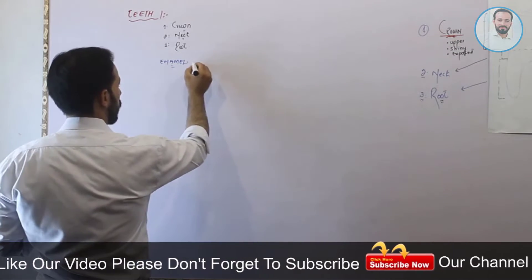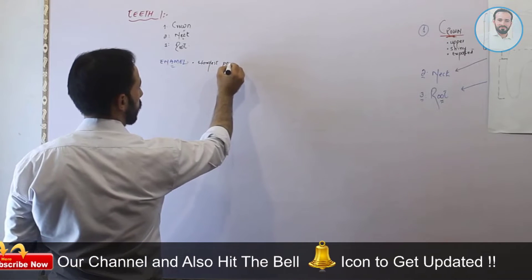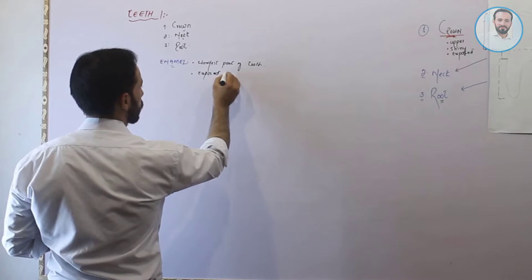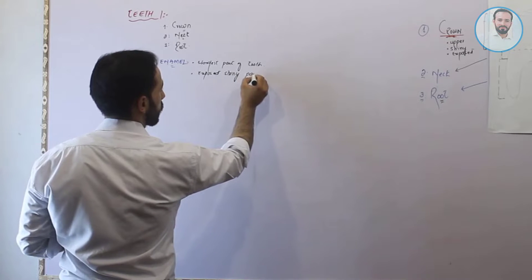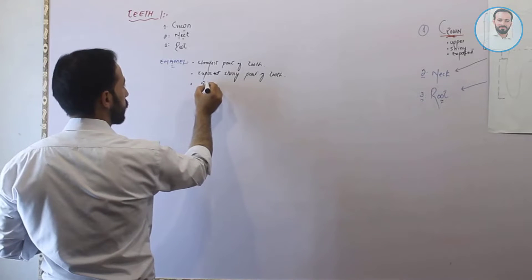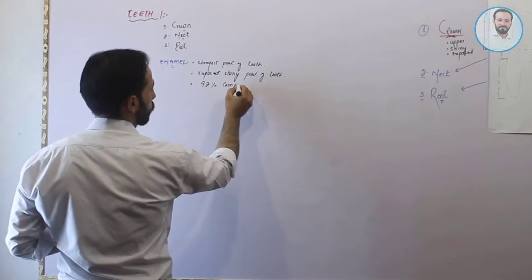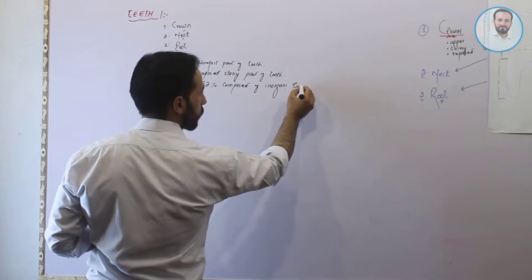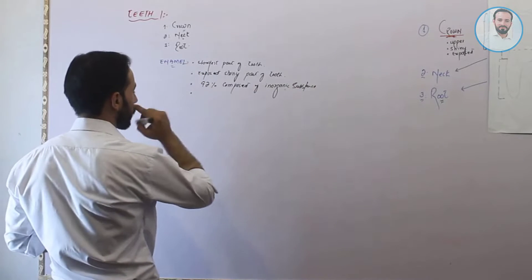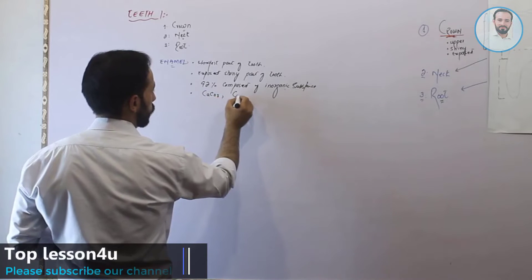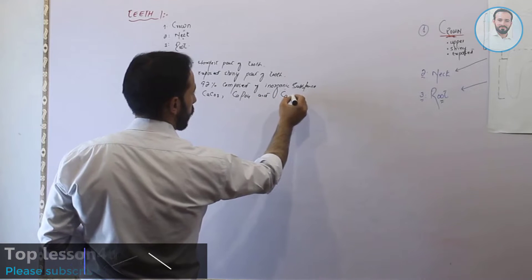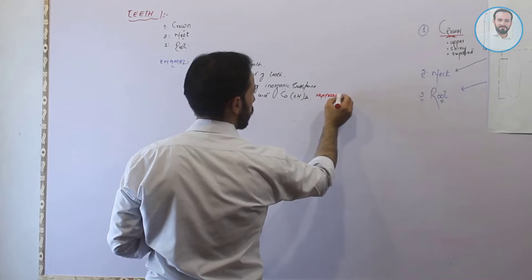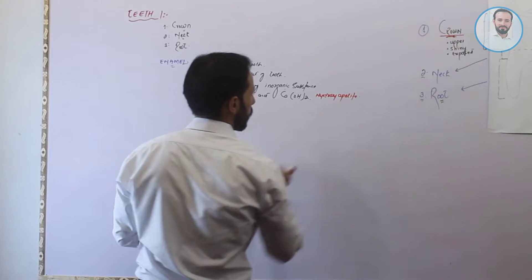What is enamel? Enamel is the hardest part of the tooth. It is the exposed, shiny part of the tooth. It is 92% composed of inorganic substances. These inorganic substances are calcium carbonate, calcium phosphate, and calcium hydroxide. Combined, they make a mass which is called hydroxyapatite.